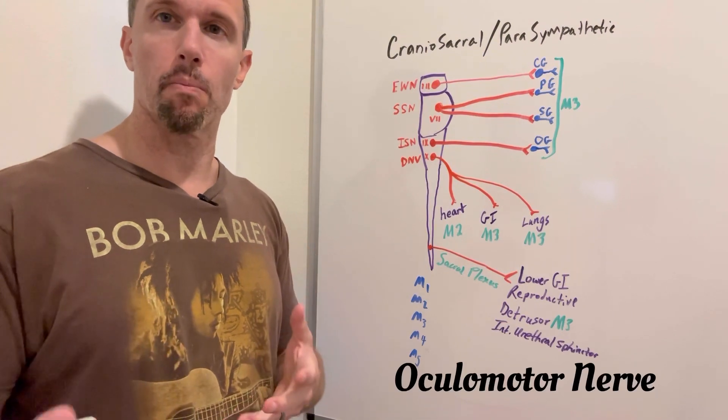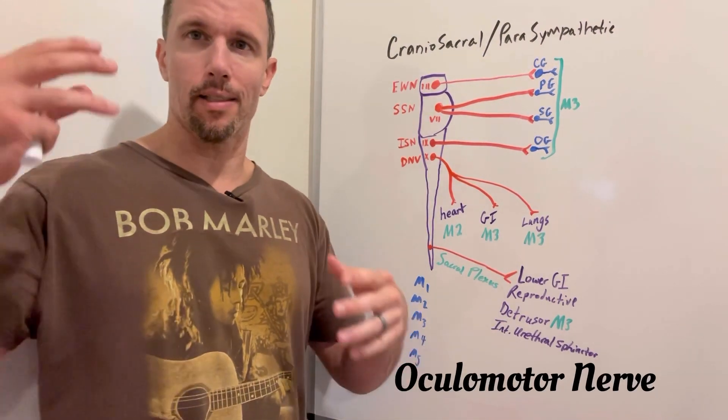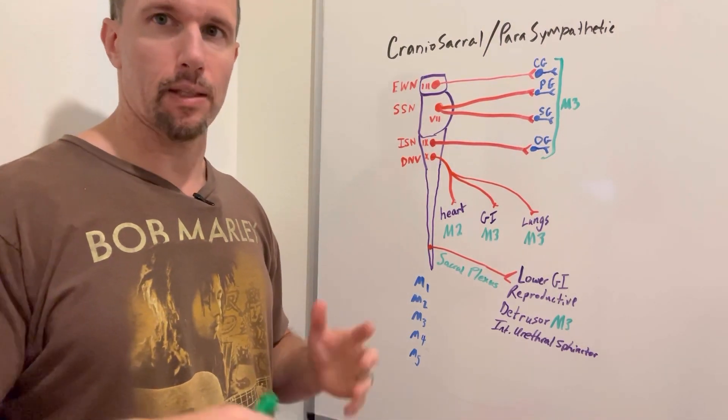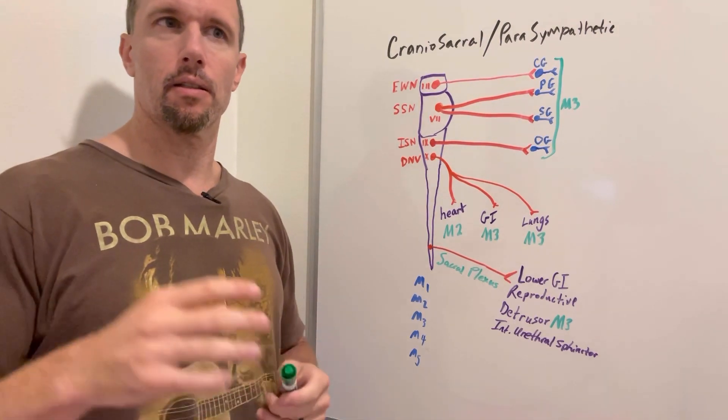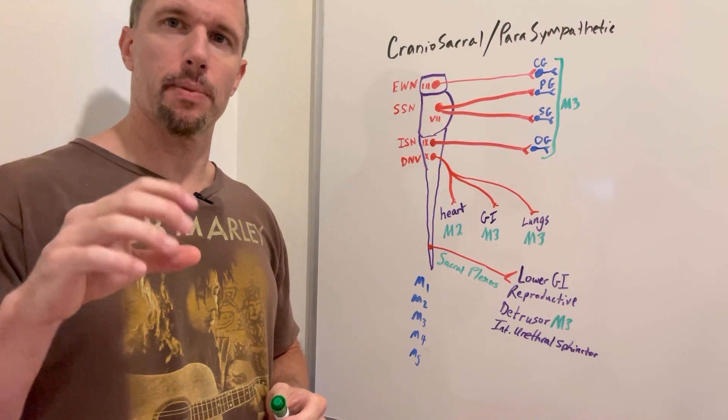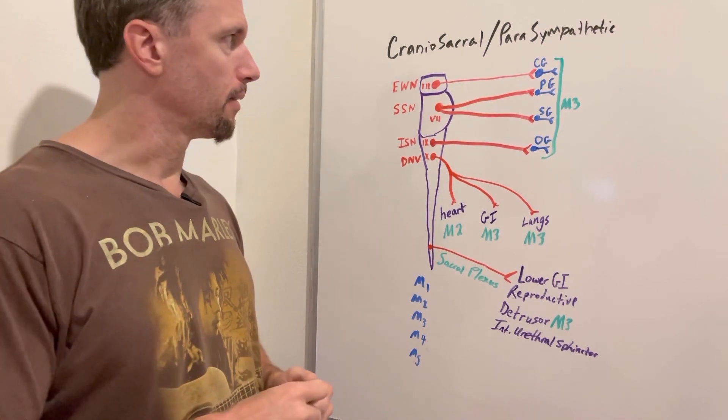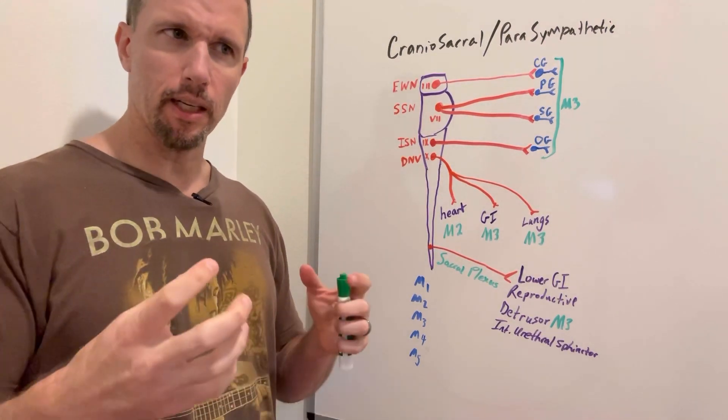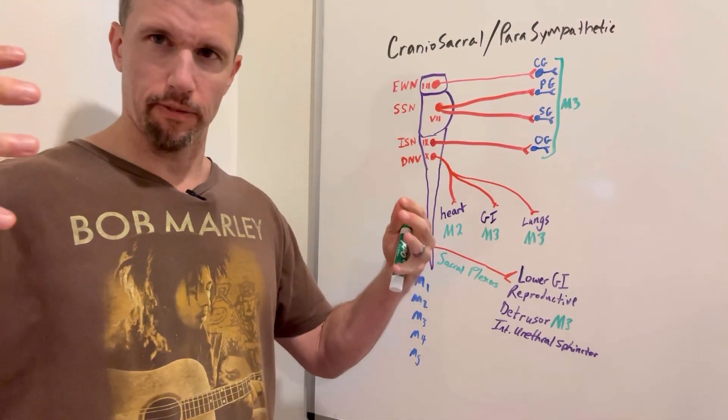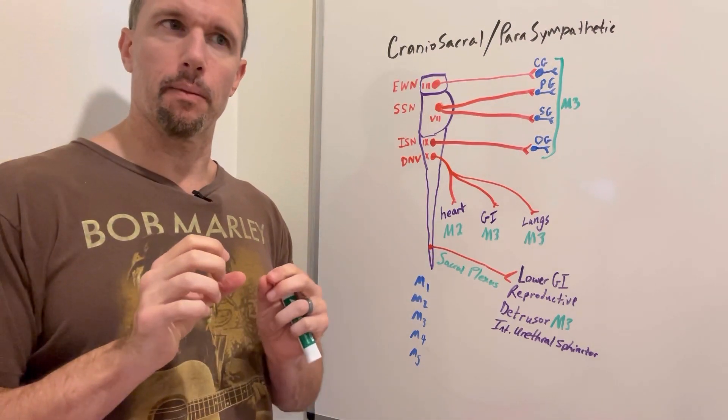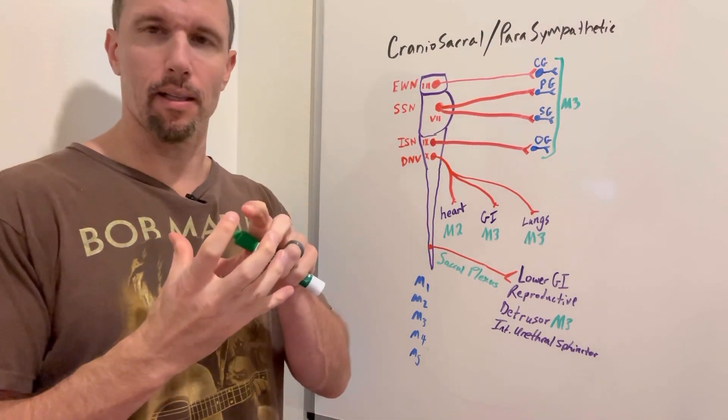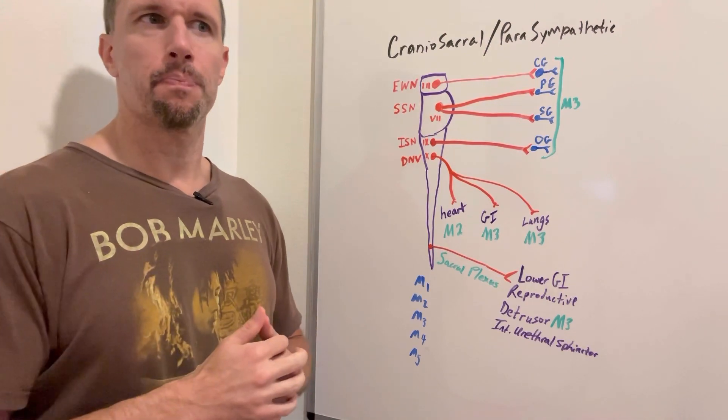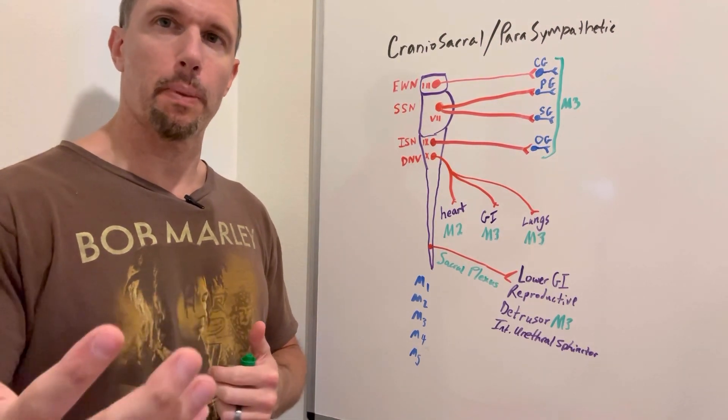Let's start with cranial nerve 3, the oculomotor nerve. It innervates the eye extrinsic muscles, but it also innervates the pupil, and parasympathetic innervation to the pupil causes contraction or meiosis. It also affects the ciliary muscle that determines your lens shape, causing contraction which brings the fixed ends closer together, puts the suspensory ligaments on slack, and makes the lens more globular, so it accommodates as if you were looking up close.